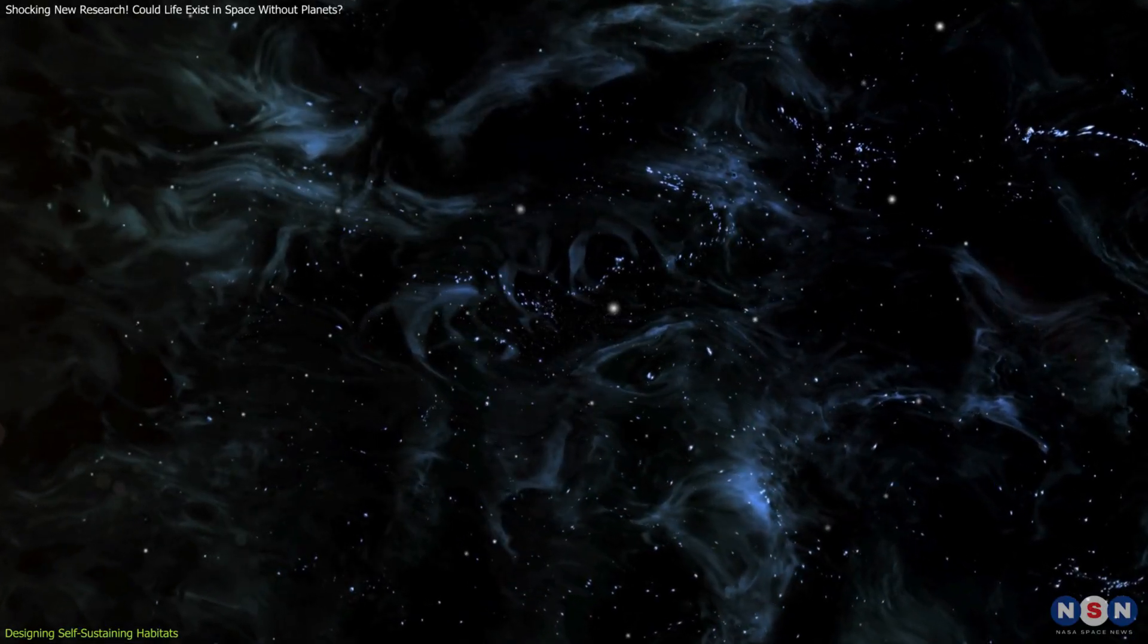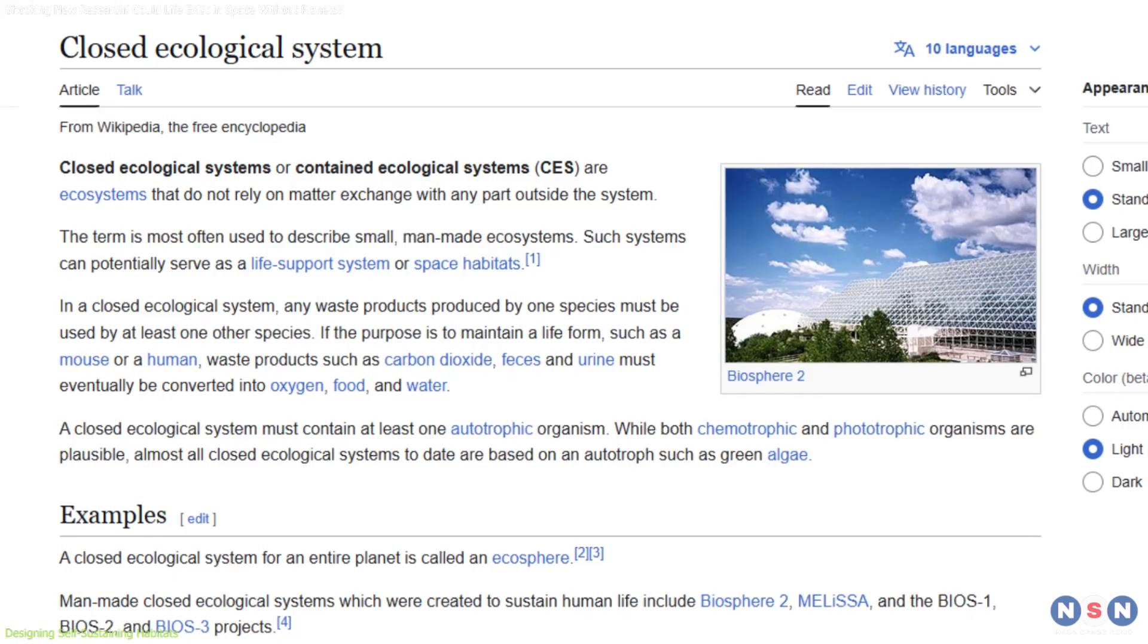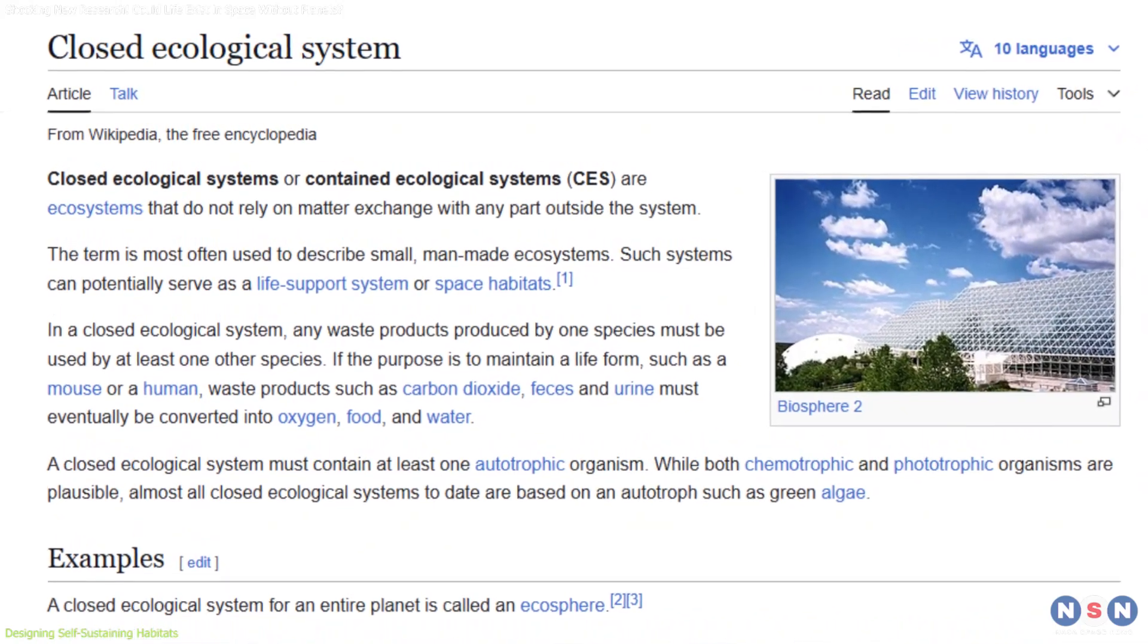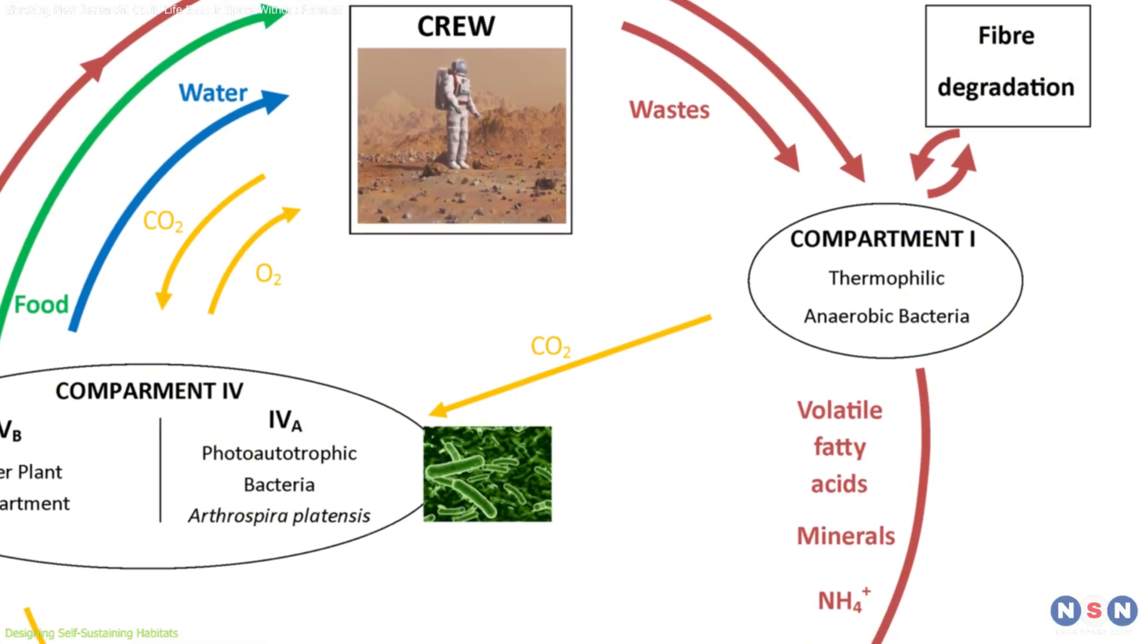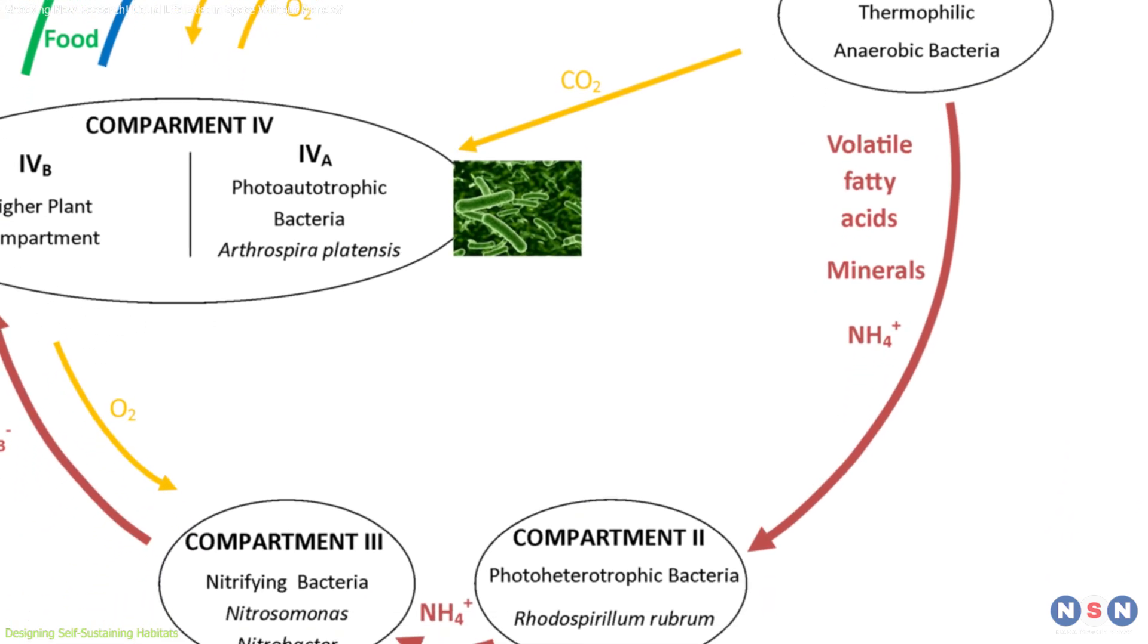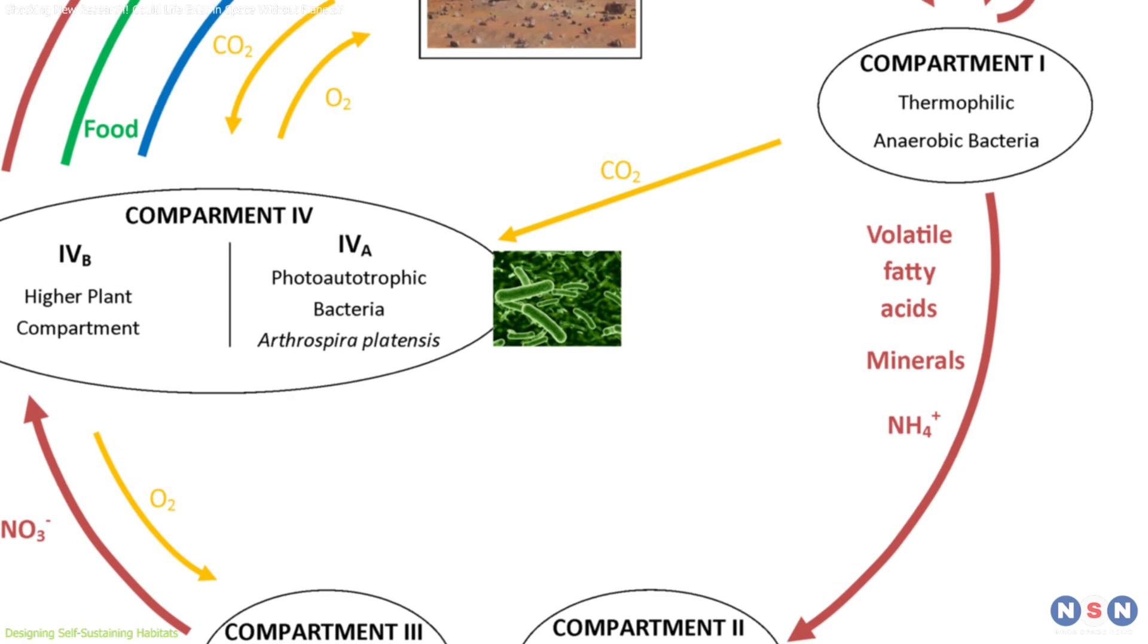Mimicking or enhancing these natural mechanisms could help sustain extraterrestrial habitats, even in the vacuum of space. These self-sustaining habitats could also integrate closed-loop ecosystems, recycling waste into nutrients. For example, microbial life could convert waste into essential elements like nitrogen and phosphorus, ensuring a continuous supply.